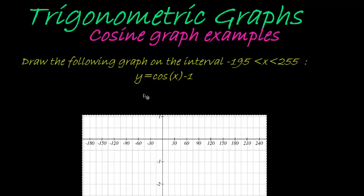So in this example, they ask us to draw the following graph on the interval negative 195 degrees and 255 degrees, and here they give us that y is equal to cos of x minus 1. So remember our steps that we are going to do.